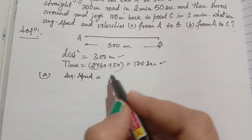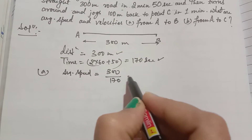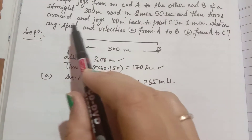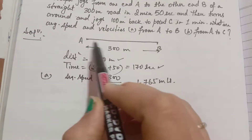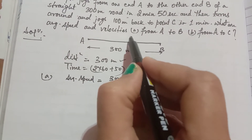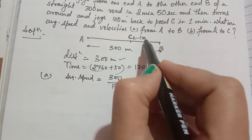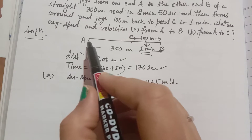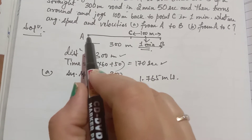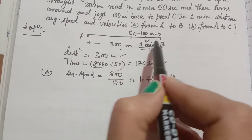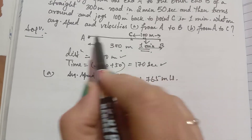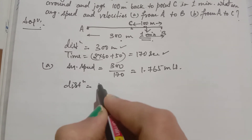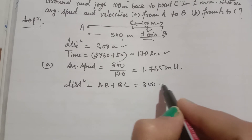Speed equals distance divided by time: 300 ÷ 170 = 1.765 meters per second. Now for the second case, he turns around and jogs 100 meters back to point C. In the diagram, C is 100 meters back from B. He covers this 100 meters in 1 minute. Total distance is AB + BC = 300 + 100 = 400 meters.